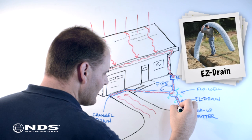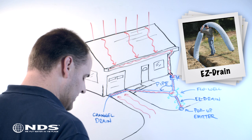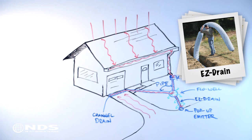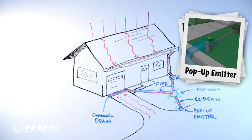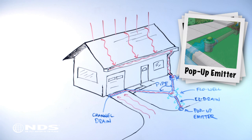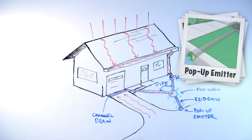Easy drain, which is a gravel-free alternative to a traditional gravel French drain, can be used to collect surface water and also disperse water over a large area. The last part of any drainage system should be a pop-up emitter. This allows excess water to safely leave the system before it can back up and potentially cause damage to your house.